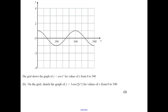The grid shows the graph of y equals cos x for values of x from 0 to 540. On the grid, sketch a graph of 3 cos 2x — we're doing two transformations again. The 3 means you stretch upwards: from 1 it goes to 3, from −1 it goes to −3. The 2x means we halve all the x-values, so 180 goes to 90, and so on.